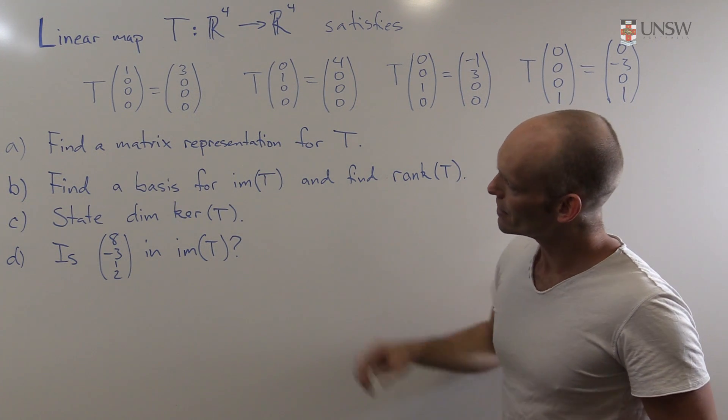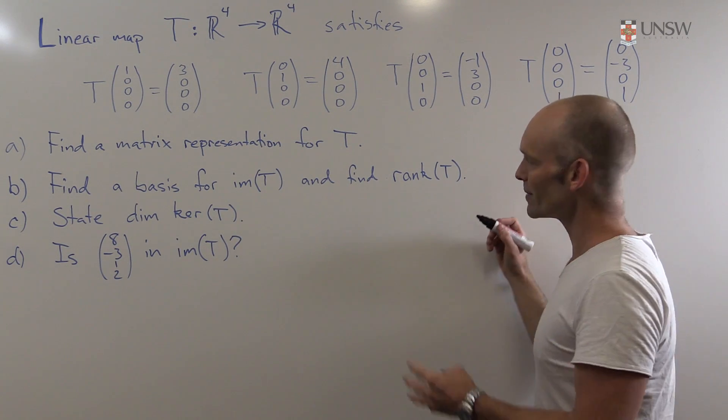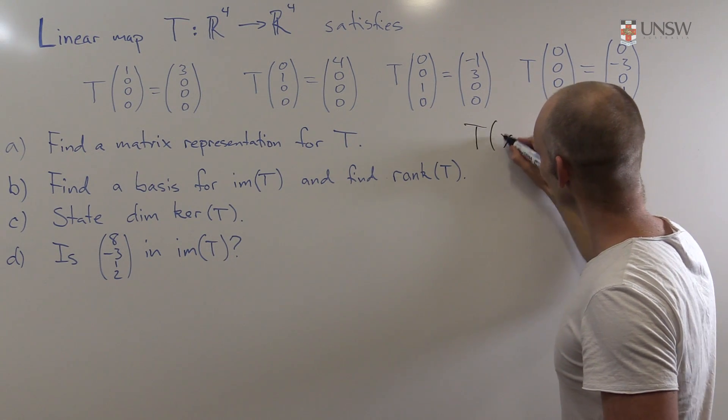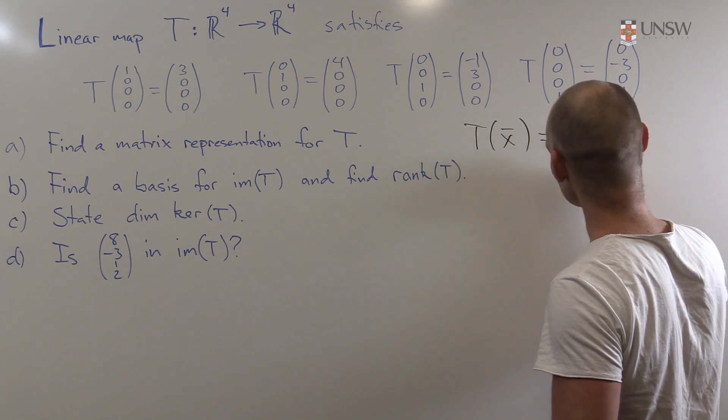So first of all, find a matrix representation for T. Well, what does that mean? Well, it means that we somehow have to write T as a function, T of x, where x is a vector in R^4, as a matrix times that x.